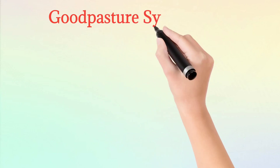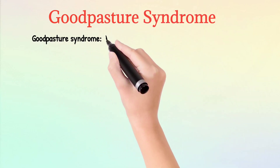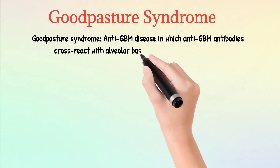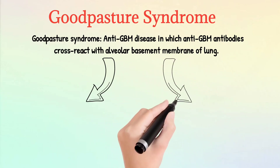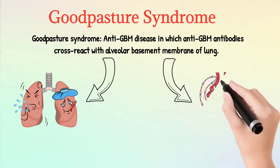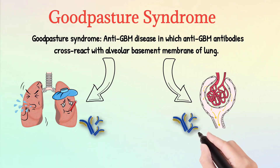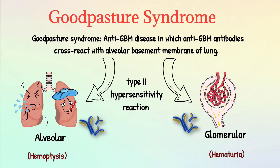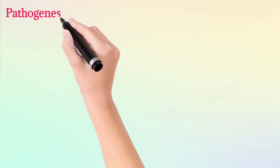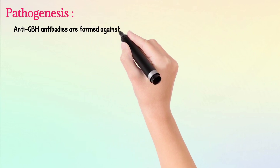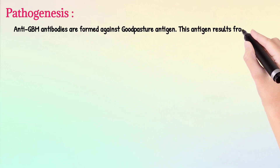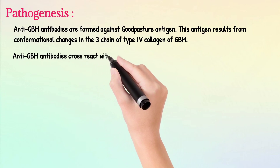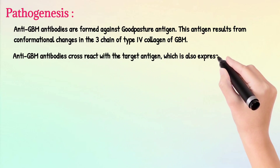Goodpasture syndrome is an anti-GBM disease in which anti-GBM antibodies cross-react with the alveolar basement membrane of the lung, representing a type 2 hypersensitivity reaction. Anti-GBM antibodies are formed against the Goodpasture antigen, which results from conformational changes in the alpha-3 chain of type 4 collagen of the GBM. These antibodies cross-react with the target antigen also expressed on pulmonary alveolar capillary basement membranes.